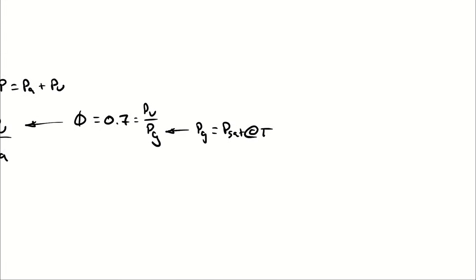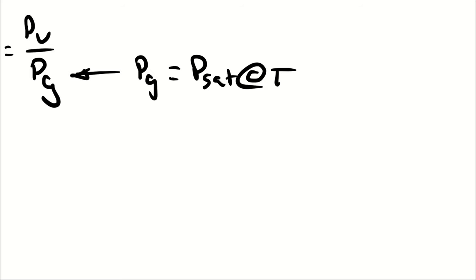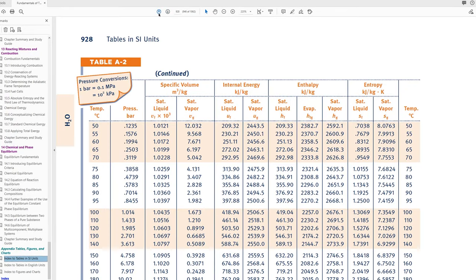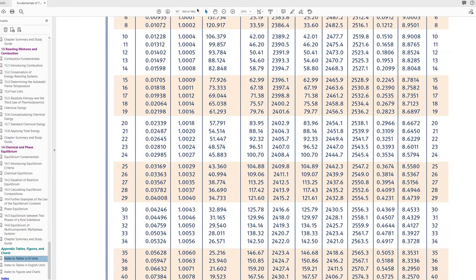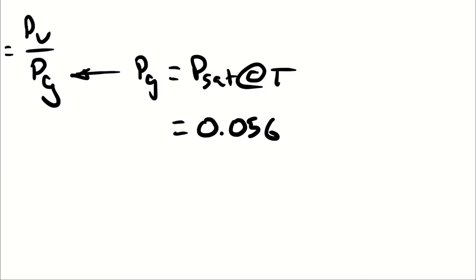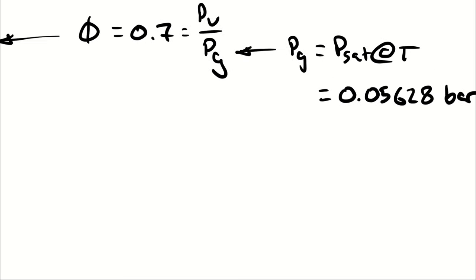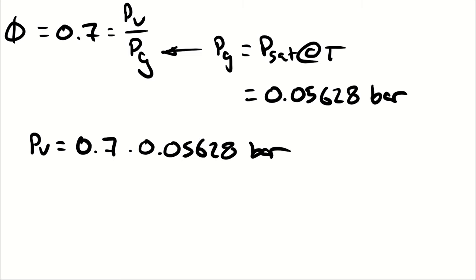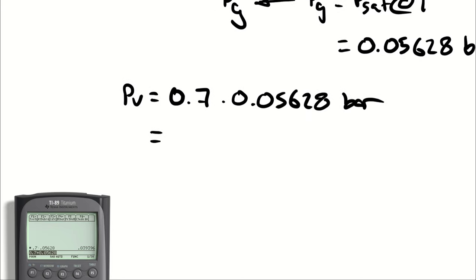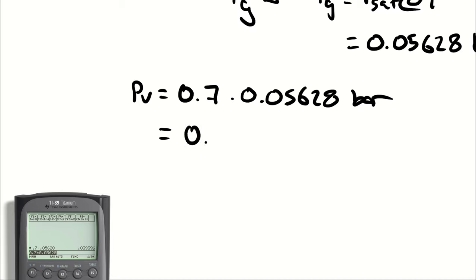Our temperature is 35 degrees Celsius, so let's find the saturation pressure corresponding to 35 degrees Celsius. I'm going to use table A2, specifically the bottom of table A22. I see that Psat corresponding to 35 degrees Celsius is 0.05628 bar. So Pv is going to be 0.7 times that number. 0.7 times 0.05628 yields a vapor pressure of 3.9 kilopascals or 0.0394 bar.